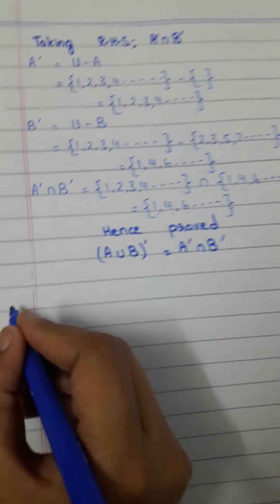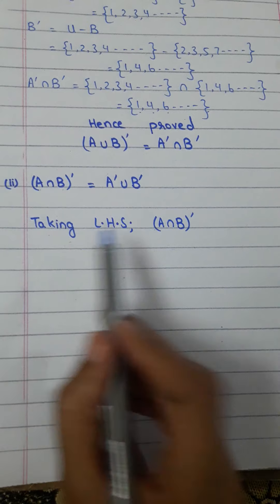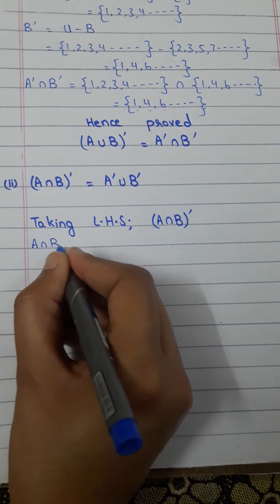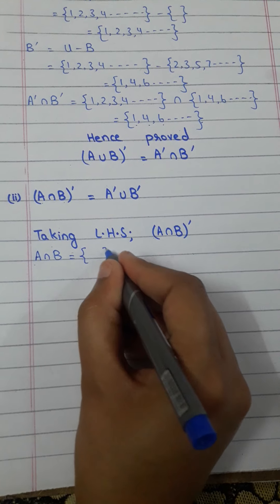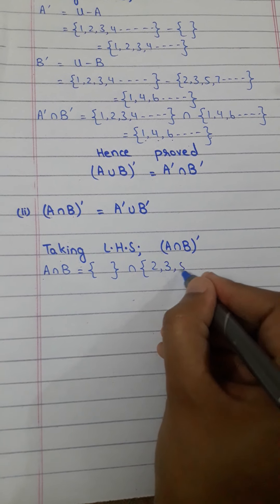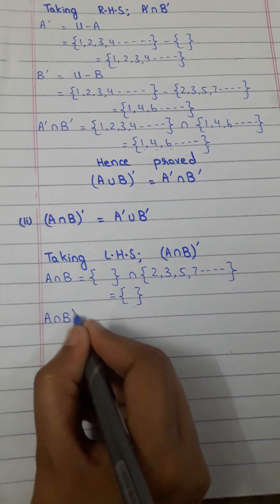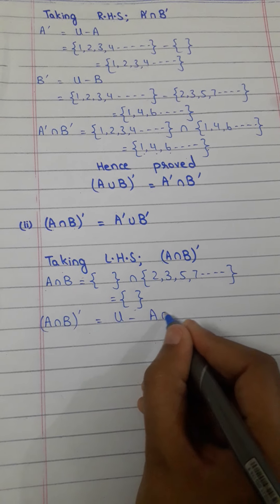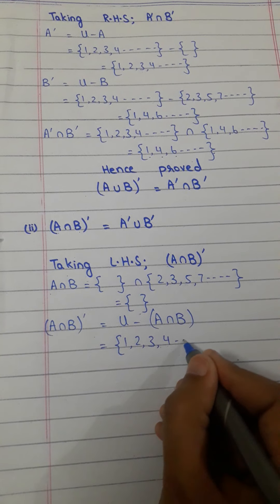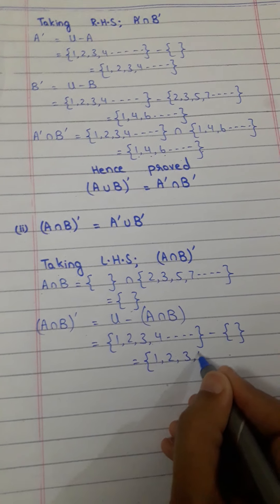Now taking the second law: (A∩B)' = A'∪B'. Taking the left-hand side, first find A∩B. Write the value of A, which is the empty set, intersection B which is {2, 3, 5, 7, ...}. The intersection becomes the empty set. Now find the complement: U minus (A∩B) = {1, 2, 3, 4, ...} minus the empty set = {1, 2, 3, 4, ...}.